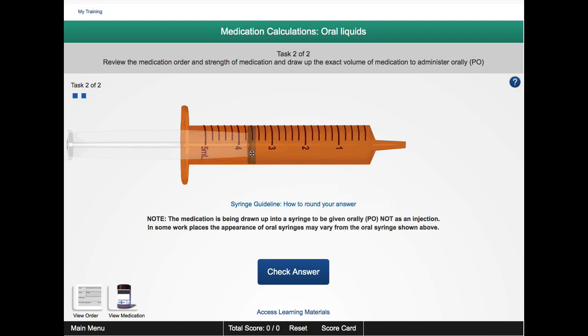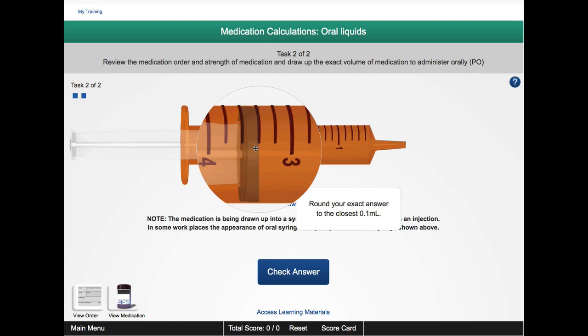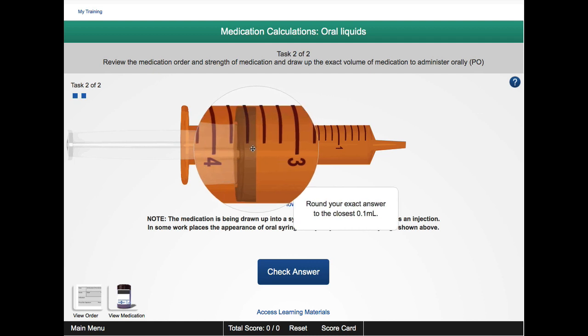So just be aware that with the 5 mil syringe, even though the black lines are marked at every 0.2 mil increments, you can actually draw the plunger to 0.1 mil positions of accuracy.